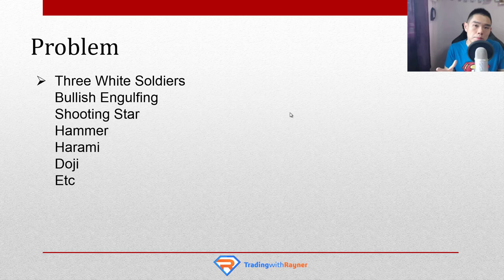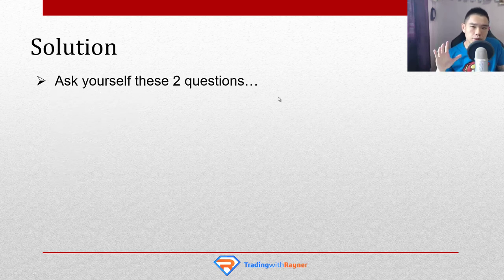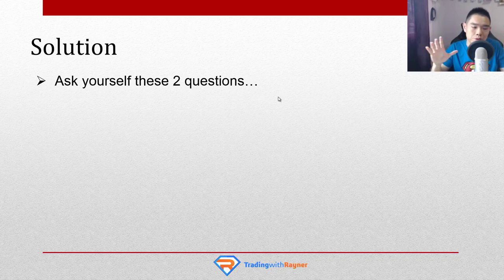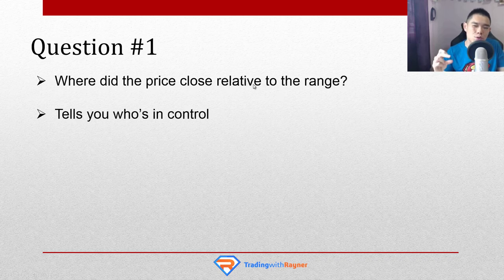So what's the solution if you don't want to memorize candlestick patterns, but you still want to know the meaning behind them? My suggestion is this: every time you look at a candlestick pattern and you're not sure what it means, ask yourself these two questions. When you ask yourself these two questions, you will gain clarity you've never seen before — it's kind of like x-ray vision, and you'll see something that most traders will never see if they're always trying to memorize patterns. The first question: where did the price close relative to the range? This question will tell you who's in control — are the buyers in control, the sellers, or nobody?